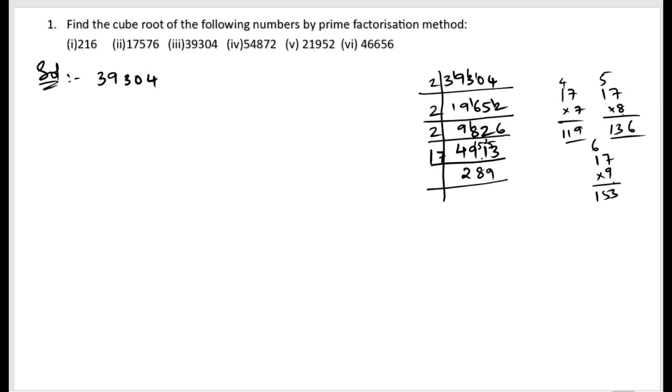So from 4913, first 17 times 2 is 34. How much left? 151. 17 times 8 is 136. So that means how much left? 15 left. So 153. And we are getting 153 by 9.